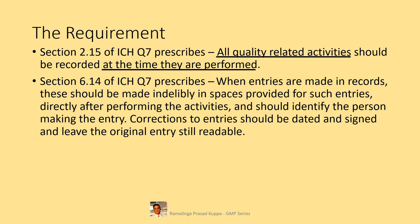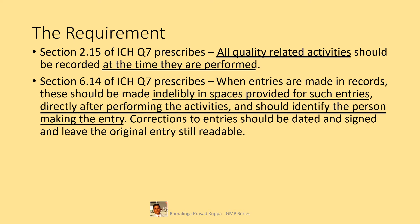Section 6.14 of ICH Q7 prescribes that when entries are made in records, they should be made indelibly in spaces provided for such entries, directly after performing the activities, and should identify the person making the entry. Corrections to entries should be dated and signed, and leave the original entry still readable. This section prescribes that data should be recorded only in the spaces provided in the BPR, and indelibly means the recorded data should not be erased. It should also identify the person who entered the data.